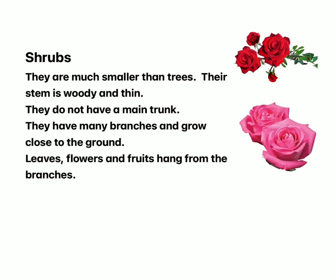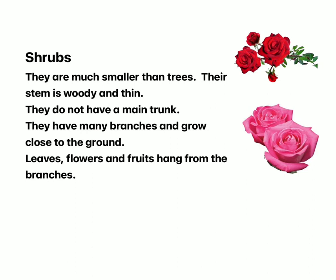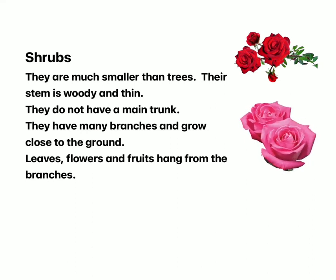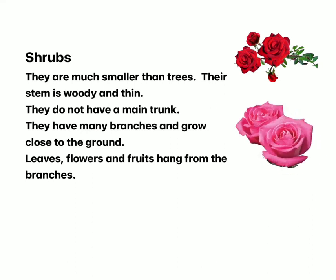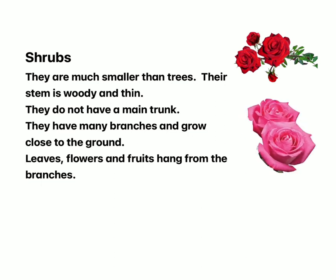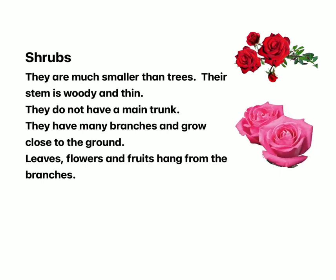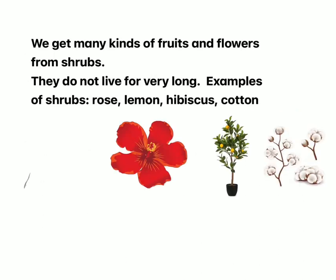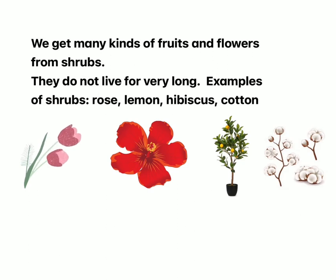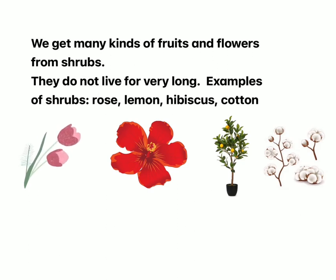Shrubs are much smaller than trees. Their stem is woody and thin. They do not have a main trunk. They have many branches and grow close to the ground. Leaves, flowers, and fruits hang from the branches. We get many kinds of fruits and flowers from shrubs. They do not live for very long.